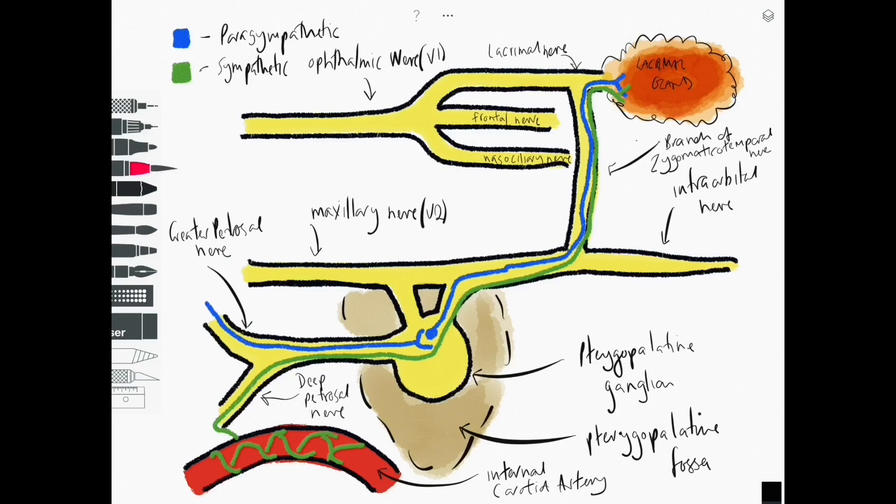They've already synapsed in the cervical ganglion and then they make a similar route along trigeminal nerve fibers to reach the lacrimal gland.